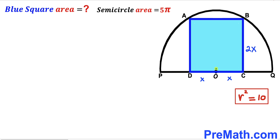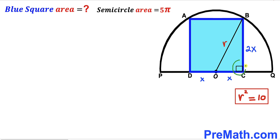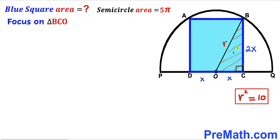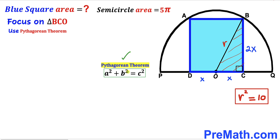In the next step I am going to connect center O with vertex B. We can see that OB is the radius of the semicircle, so I'll label it lowercase r. The angle at B is 90 degrees since we are dealing with the blue square. Now we are going to focus on right triangle BCO and apply the Pythagorean theorem: a squared plus b squared equals c squared. In our case the hypotenuse is lowercase r, and the two other legs are x and 2x.